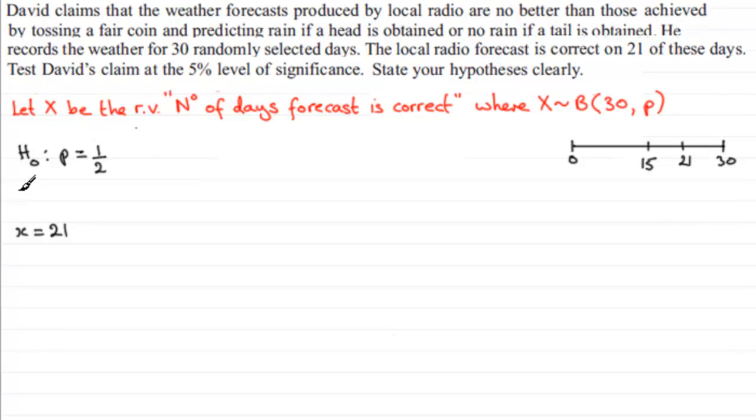that tells us that maybe P is greater than a half. So as our alternative hypothesis, H1, we're going to take P as being greater than a half. And we're testing this at the five percent level of significance. So I'm going to have alpha, which is the symbol I use for the level of significance, is going to be five percent or 0.05.